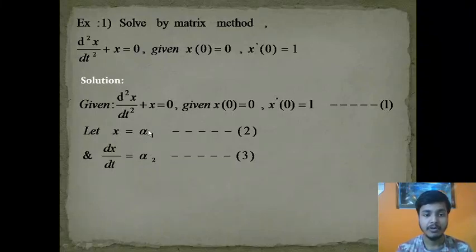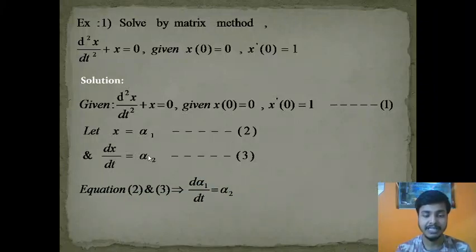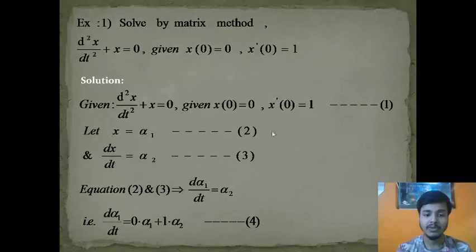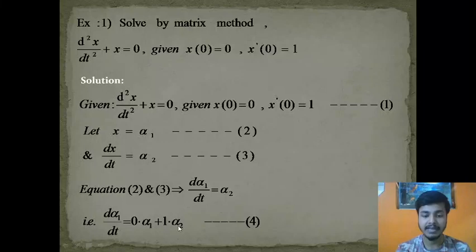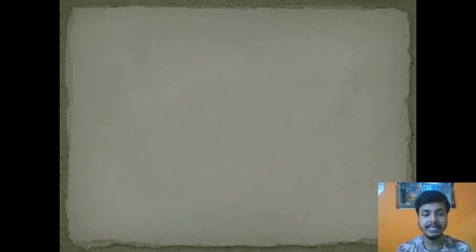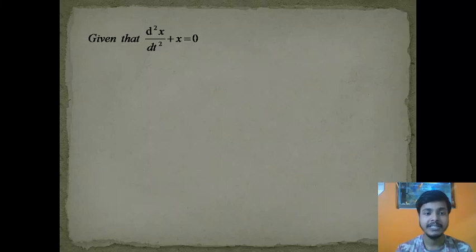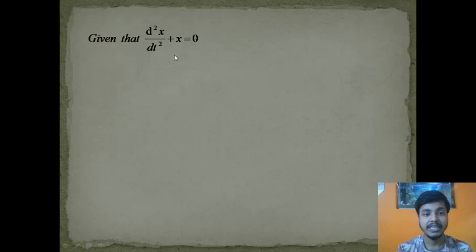Using these substitutions, we can write d/dt of x — where x is α₁ — so d/dt of α₁ equals α₂. This can be written as d/dt of α₁ = 0·α₁ + 1·α₂. This is equation 4. Now from the given equation d²x/dt² + x = 0, we can apply the substitution to get another equation.